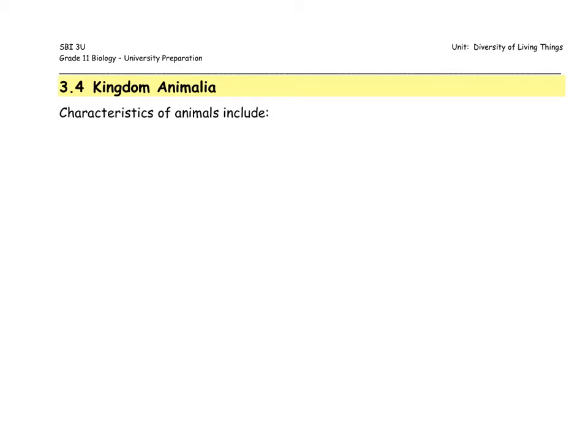I'm hoping that in your list, you included the fact that all animals, by definition, have to be multicellular. Kingdom Animalia typically includes organisms that are a little bit more complex. The more complex you are, the more likely you are to be multicellular and to require specialized cells. Hopefully you included eukaryotic — animals, being more complex, more evolved, are likely to have cells that have a membrane-bound nucleus and some specialized organelles.